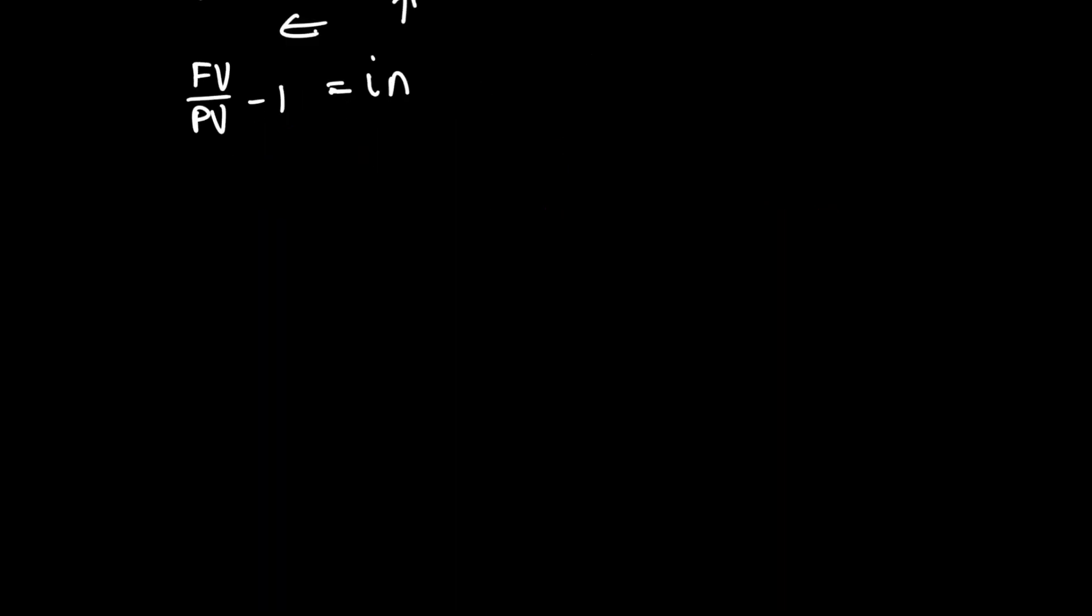And now what we're going to do is, again, the aim is to have n by itself. And n is multiplied by i, so we can divide through by i on both sides. So we're going to have future value over present value minus 1 divided by i is equal to n. So now we have this formula where n is the subject of the formula.